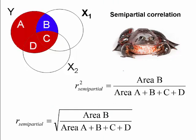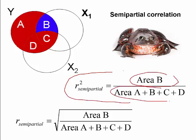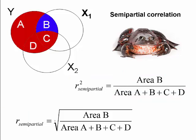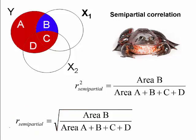The squared semi-partial correlation is area b divided by the total variance of y. If we take the square root of that, we get the unsquared semi-partial correlation — just as we have squared and unsquared versions of other statistics. So the semi-partial correlation (not squared) is the square root of area b divided by the total variance of y.